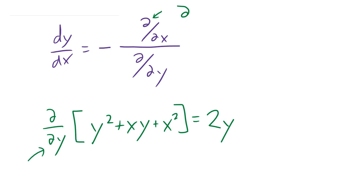Derivative of x plus y — I pretend like x is just some constant because I'm doing a partial derivative, so I don't have to do product rule. In the view of partial derivatives, x is a constant, so derivative of xy is just going to be x. Derivative of 5y is 5 with respect to y; 10y would be 10; xy would be x. And derivative of x², since x is a constant, the derivative of that is 0 — it doesn't matter it's squared. Derivative of 5² is still 0, because it's the derivative of 25.